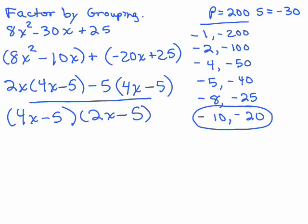And the last thing would be to check by doing the FOIL method, and if you do that, you will get back to 8x² - 30x + 25.